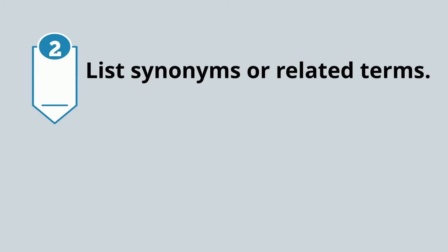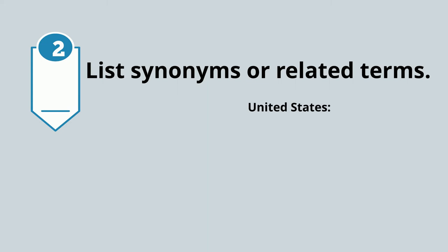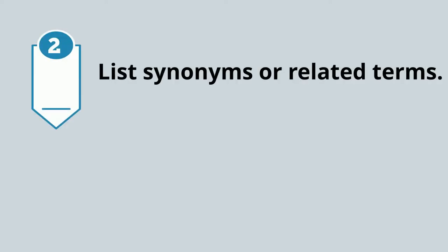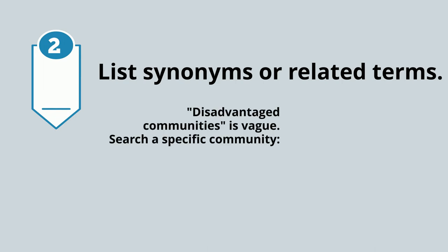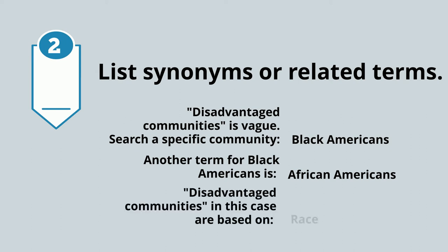The second step is to look at your concepts and decide if there are better or simpler ways to describe them. Environmental pollution is better searched as the simpler term: pollution. Our second concept is geographical area — the United States. We'll keep it as United States rather than America, because there's North America, South America, etc. We'll also search Louisiana specifically, because that is where Cancer Valley exists. Our third concept, disadvantaged communities, is a bit vague — this is actually about Black Americans, so we'll search that. Another term is African American, and since the concept is based on race, we'll search that as well.